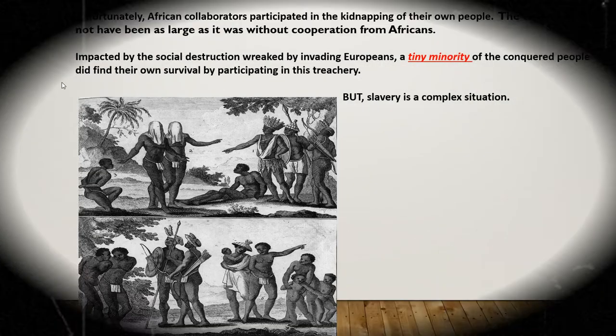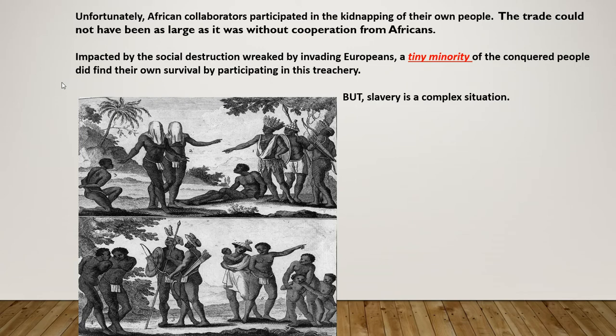This part gets a little tricky and sensitive, but unfortunately it is true. Africans collaborated and participated in the kidnapping of their own people. The trade could not have been as large as it was without cooperation from other Africans. When the white men came over to get the slaves, there were more blacks on the continent of Africa than the white men who came over — they had to have cooperation from other Africans. It was a tiny minority, not everybody. It was just a small number of people who actually cooperated with giving slaves over to the slave catchers.